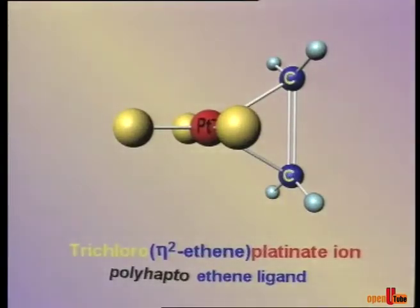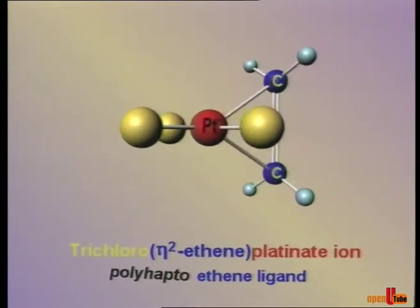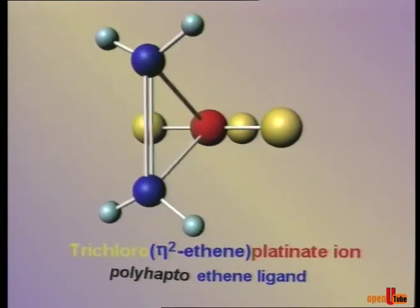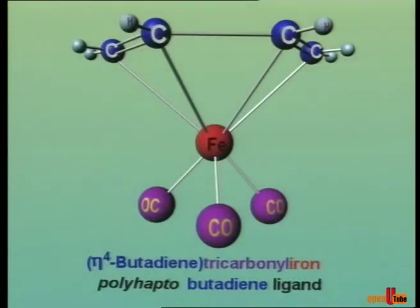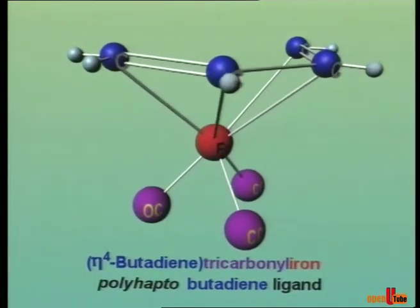Trichlorodihaptoethene platinate contains a dihaptoethene ligand. In this case, butadiene ligand is a tetrahaptoligand.